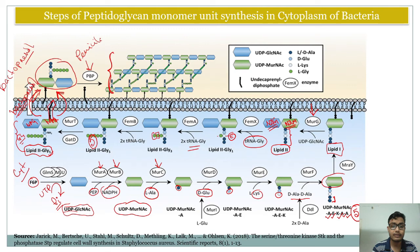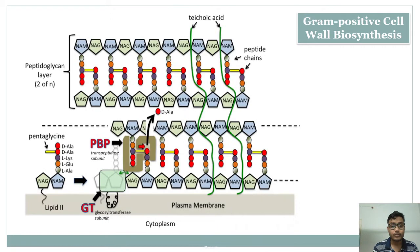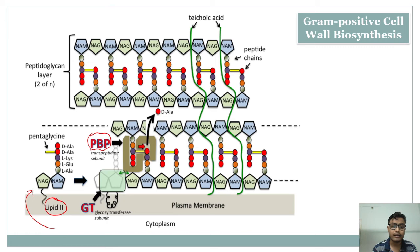Outside the bacteria, penicillin-binding protein (PBP) plays a major role. When Lipid II comes from the cytoplasm to the outside of the bacteria, PBP comes into play. An enzyme called transpeptidase acts here — transpeptidase cleaves the terminal D-alanine from one of the NAM layers on the lower surface.